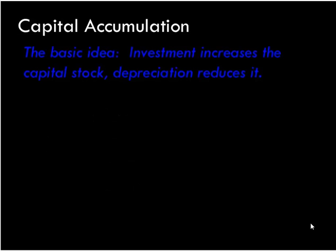So if we understand how capital per worker evolves over time — how it's accumulated or disaccumulated — then we understand how the system works. In capital accumulation, we have two warring parties: investment, which increases capital, and depreciation, which reduces it.